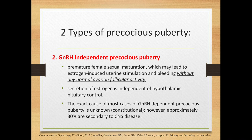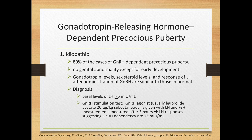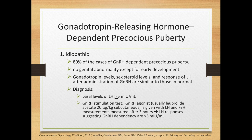The exact cause of most GnRH-dependent precocious puberty is unknown, or constitutional. However, approximately 30% are secondary to CNS disease. For the idiopathic subtype, 80% of GnRH-dependent cases fall here — there are no genital abnormalities except early development. Gonadotropin levels, sex steroid levels, and LH response after GnRH are similar to normal children. To diagnose, we determine LH: basal LH levels greater than or equal to 5 mIU/mL are diagnostic of idiopathic GnRH-dependent precocious puberty.